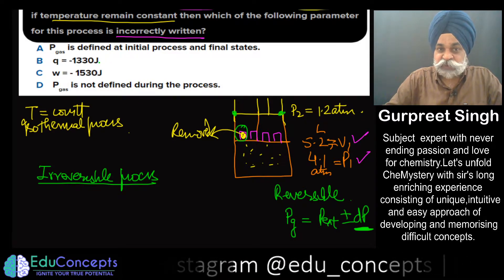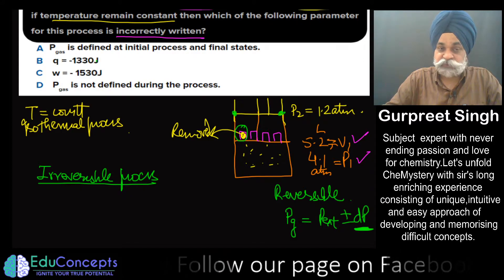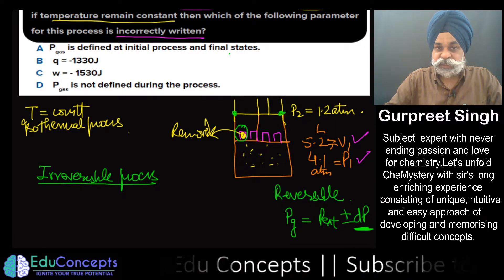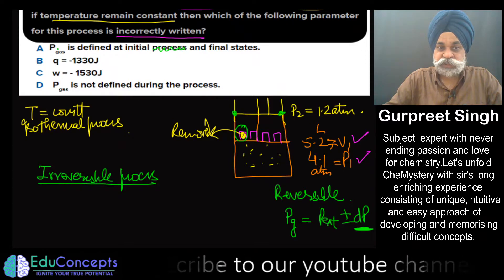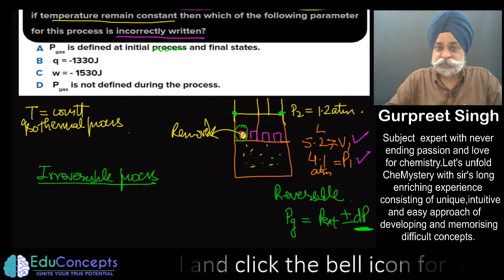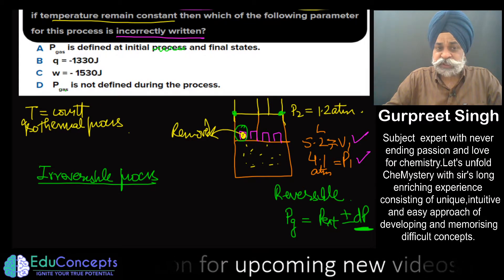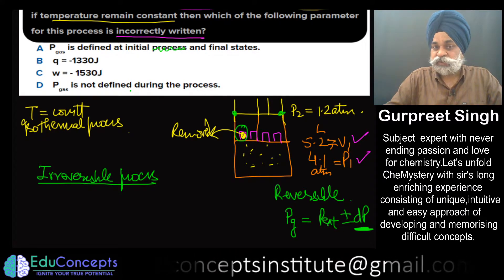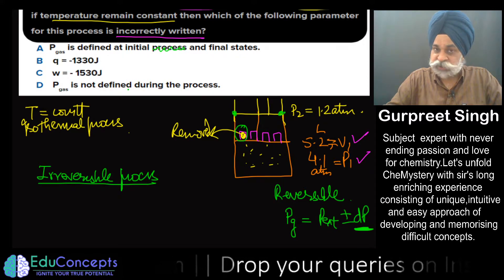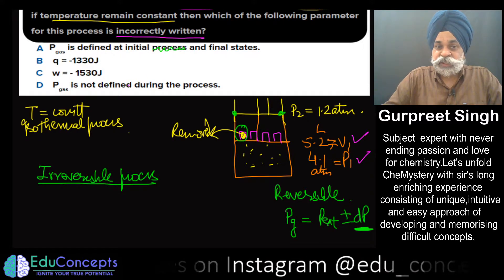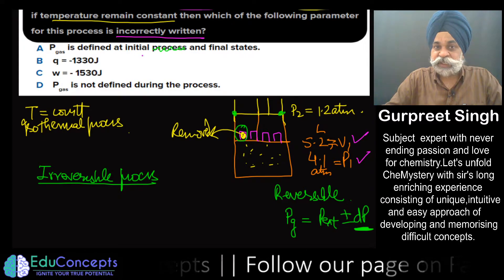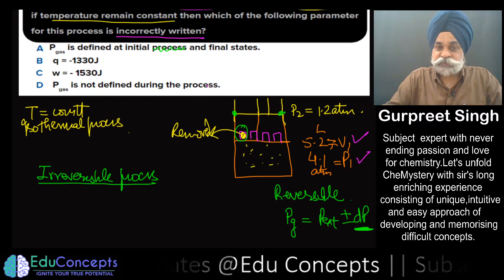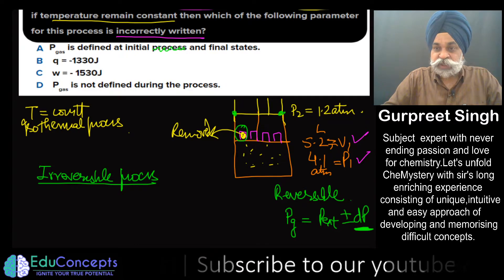Let us now see the options. One option says: the pressure of the gas is defined at the initial and final state. Another option says: the pressure is not defined during the process. People unknowingly tend to see this as the incorrect option and the answer to the question, but let us understand this in a better way. Both of these statements are worth examining carefully.